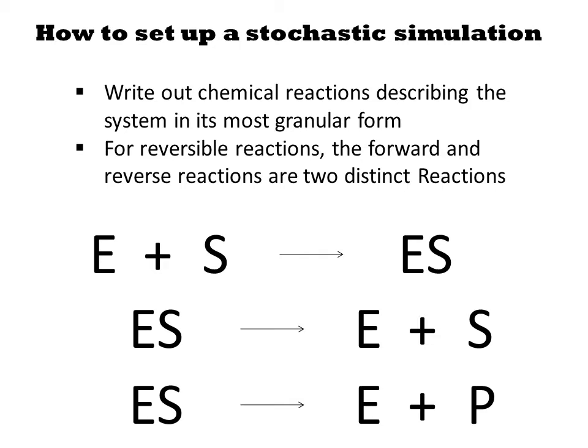Let's try the example of Michaelis-Menten kinetics. The first step is to write out all the elemental reactions. For reversible reactions, the forward and reverse reactions are two distinct reactions. So we'd have an E plus S to ES step, its reverse reaction, and then ES to E plus P.